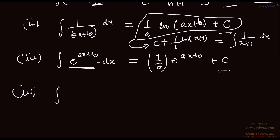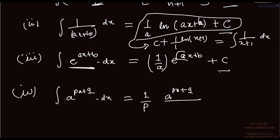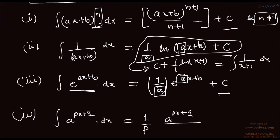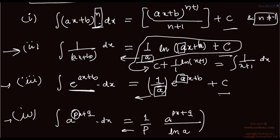The fourth standard formula: the integral of a to the power (px + q) dx equals 1/p times a to the power (px + q) divided by ln a, plus c. Here a is greater than 0 and a is not equal to 1, because ln a is in the denominator. You can see that everywhere the coefficient of x is brought down in every case.